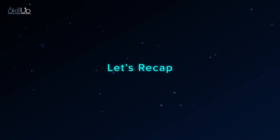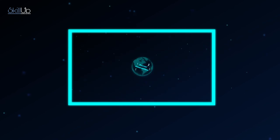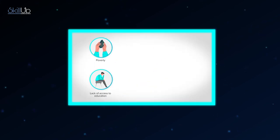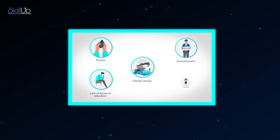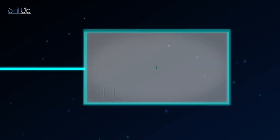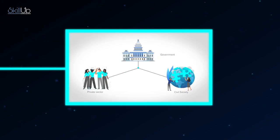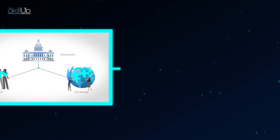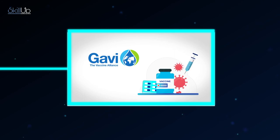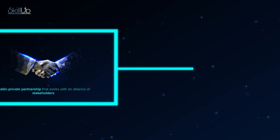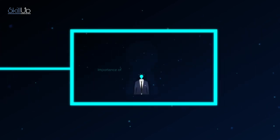Let's recap. Social innovation provides novel and effective solutions to pressing problems like poverty, lack of access to education, climate change, unemployment and malnutrition. Collaboration among actors like the government, the private sector and civil society groups plays a key role in driving social innovation and achieving solutions. Social innovation, like that of Gavi, is strengthened by strong partnerships among the stakeholders. Innovative ideas can come from beyond the individuals involved in the innovation process.